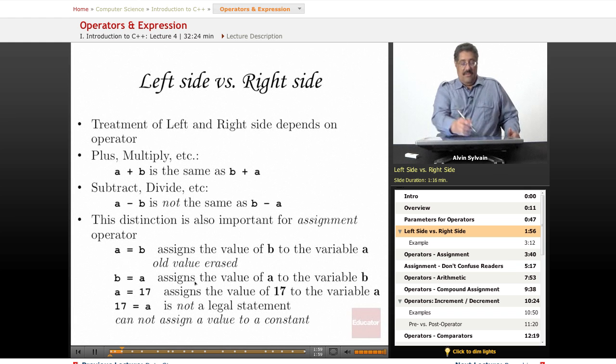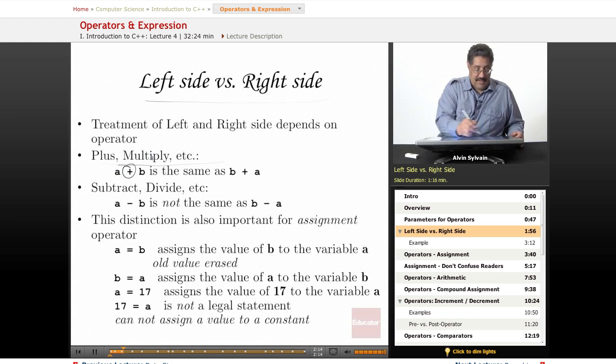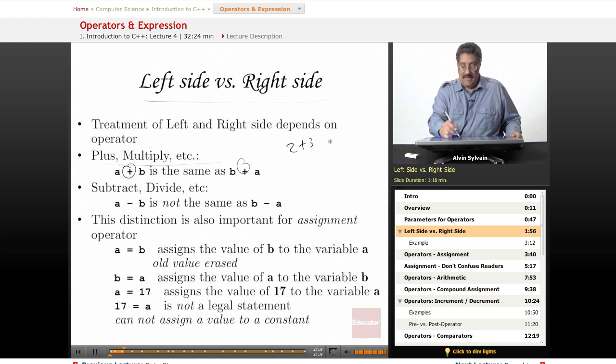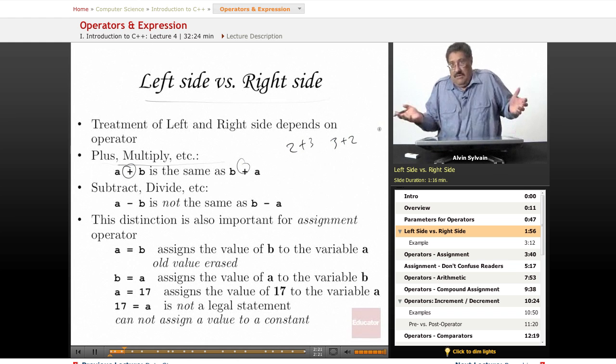The left side and right side is important. You get different results based on what your left and right values are. Some things you get the same things, like plus and multiply, for example, called commutative operators. A plus B is the same as B plus A. 2 plus 3 is 5, 3 plus 2 is still 5.